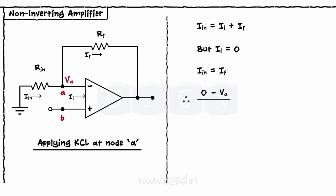Therefore, 0 minus v-a upon r-in equals v-out minus v-a upon r-f. But by virtual ground concept, v-a equals v-b equals v-in.